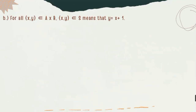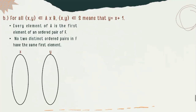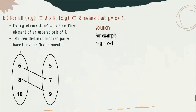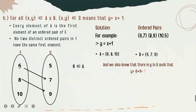Next is for B. For all X, Y elements of A×B, (X,Y) is an element of S means that Y equals X plus 1. The same two properties will serve as our guide to know if it's a function or not. We also have the solution we will use to know if question letter B is a function or not, which is Y = X + 1.